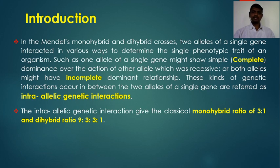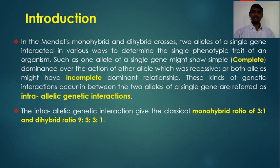In a cross between tall and dwarf plants, in F2 generation we get three tall and one dwarf plant in the ratio of 3:1 — the monohybrid ratio. In a dihybrid cross between yellow round and green wrinkled parents, in F2 generation we get progeny in the ratio of 9:3:3:1 — the classical Mendelian dihybrid ratio.